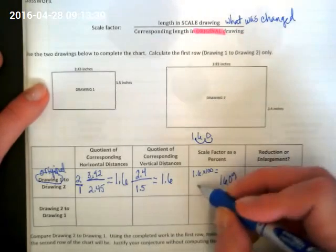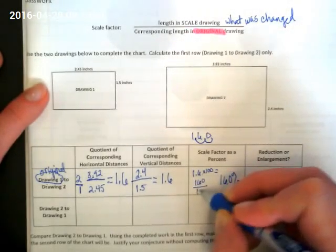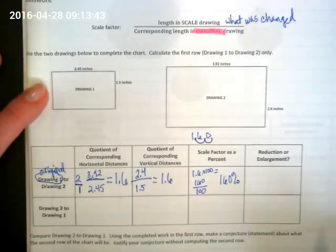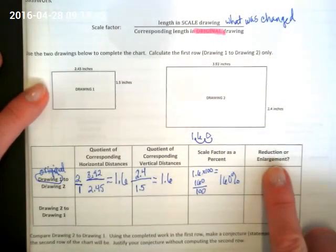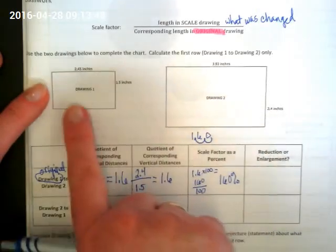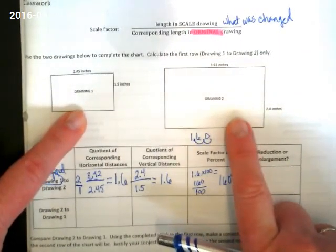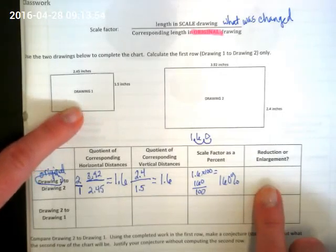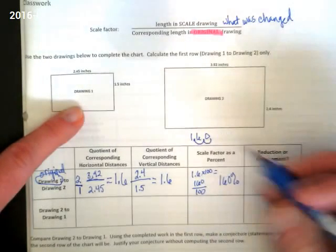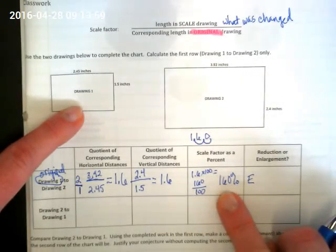Or as a fraction, it would be 160 over 100. And then the question is, is that a reduction or an enlargement? If we're going from 1 to 2, as this is the original and this is what was drawn, is this an enlargement or a reduction? And we can also tell that from the number because our number and our percent is over what? It's over 100%.